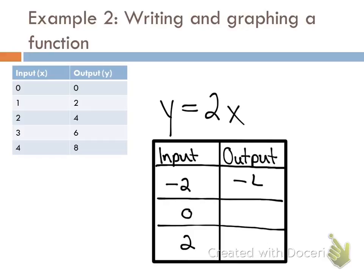Negative 4. Negative 4. What's going to be my second one? Zero. What's going to be my third one? Four. Now I have my input which is my x and my output which is my y. Now I can graph this function. So go ahead and use these ordered pairs to graph your function.